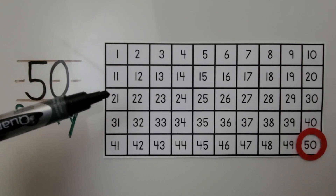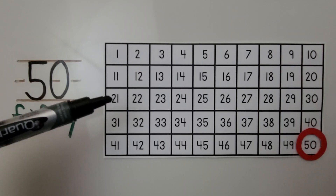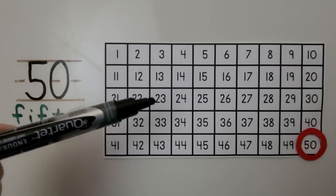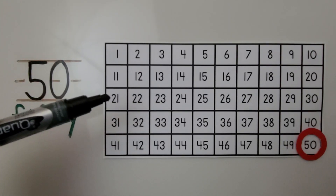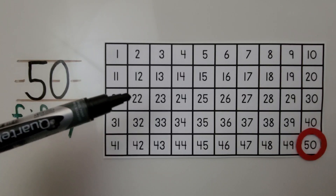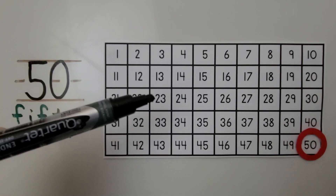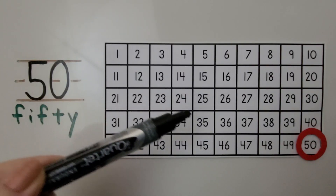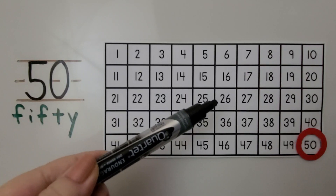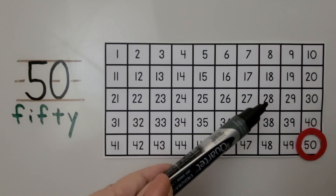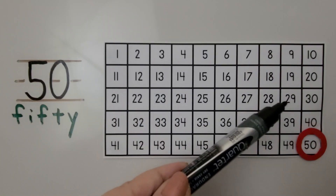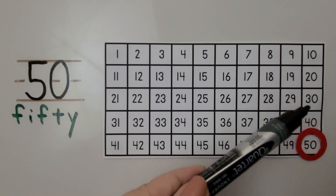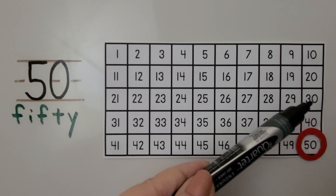In the next row, each number starts with a 2. That's for 20, 21, 22, 23, 24, 25, 26, 27, 28, 29. And now the numbers are going to start with a 3 for 30.